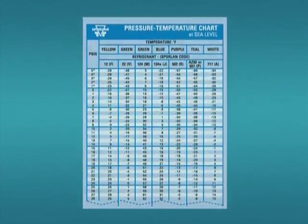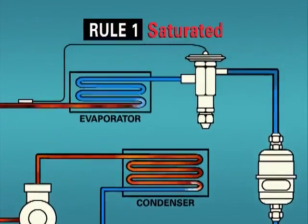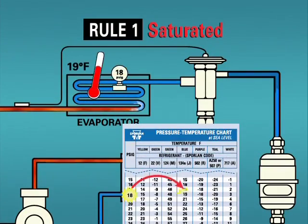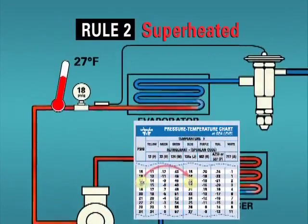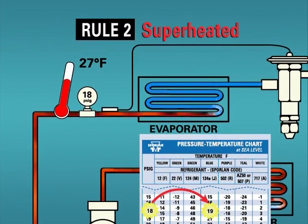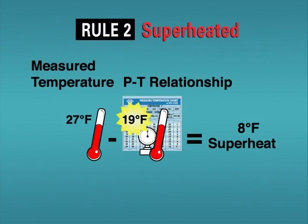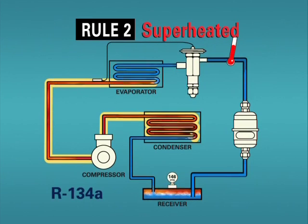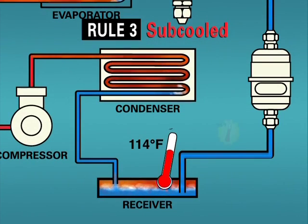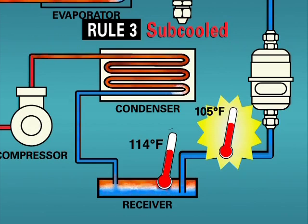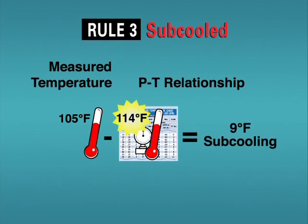With the PT card, we should be able to determine the condition of the refrigerant at any point in the system by remembering the following rules. Rule 1: If we have a liquid and vapor mixture present, as we do in the evaporator and condenser, we have saturated refrigerant which will correspond to our PT card. Rule 2: We have superheated vapor when our measured temperature is greater than the saturation temperature indicated by our PT card. The amount of superheat will be the difference in these two temperatures. Superheated vapor will be present in the suction and discharge lines of a normally operating system. Rule 3: We have subcooled liquid when our measured temperature is less than the saturation temperature indicated by our PT card. The amount of subcooling will be the difference in these two temperatures. Subcooled liquid will only be present in the liquid line which connects the condenser and evaporator coils of a normally operating system.